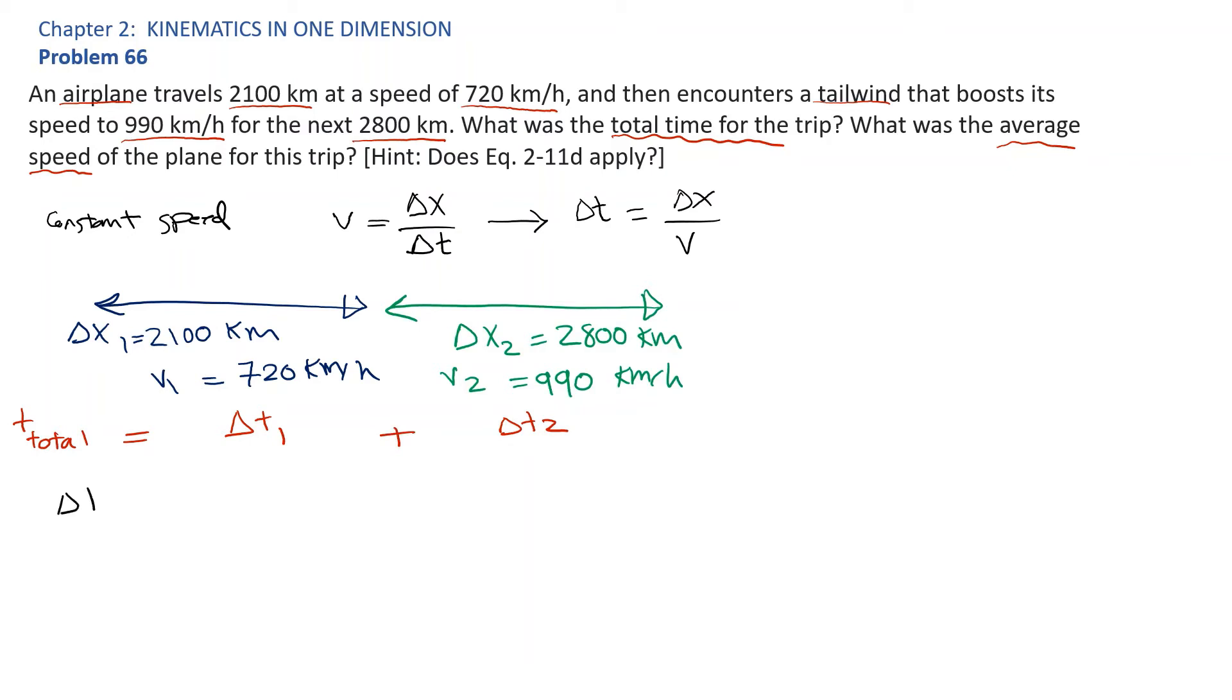Delta t1 is equal to delta x1 divided by V1, or 2100 km divided by 720 km per hour, which is equal to 2.91 hours.